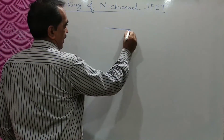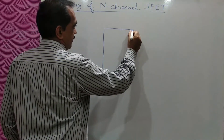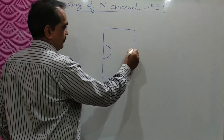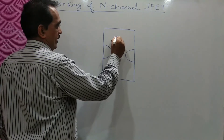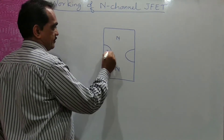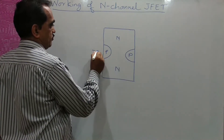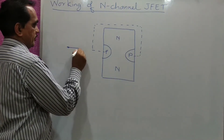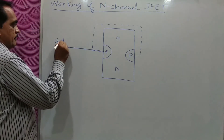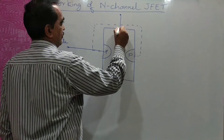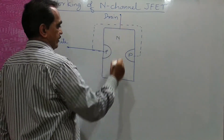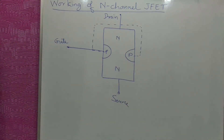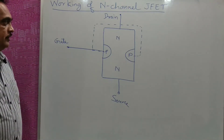It will be an N-type semiconductor bar with P-type regions embedded in it. This is N-type, and these are P-type semiconductors. Both P-type semiconductors are internally connected, and this terminal is called the gate. The terminal on top is called the drain, and the terminal at the bottom is called the source. This is the structure of the N-channel JFET.